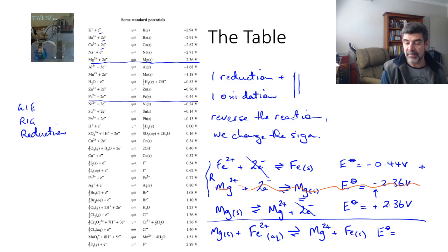In this case, it's going to be 2.36 minus 0.44, which is 1.92 volts. The fact that it is positive tells me this will be a spontaneous reaction. Therefore, if I place magnesium solid into a solution containing iron ions, I will see a reaction occur.